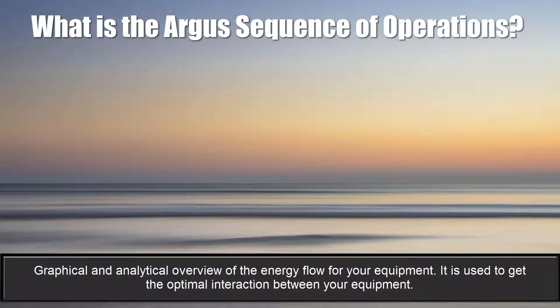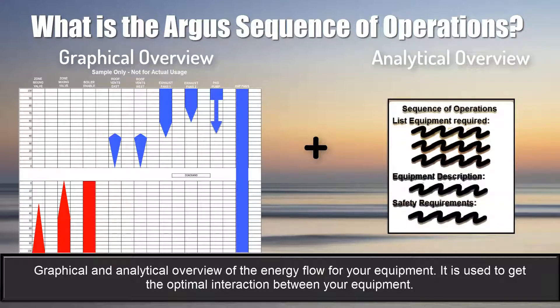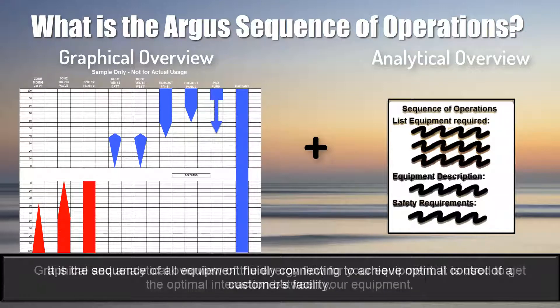What is sequence of operations? The sequence of operations is a graphical and analytical overview of the energy flow for heating, ventilation, and other requirements of a customer's control systems. It's defined as the sequence of all equipment fluidly connecting to achieve the goal of optimizing control of a customer's facility.